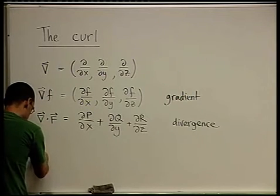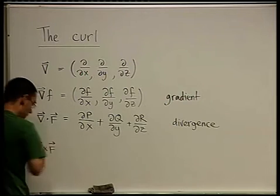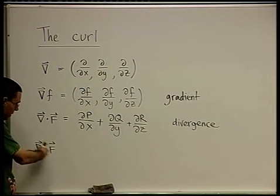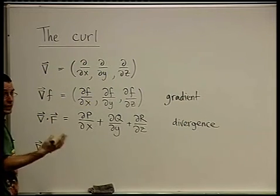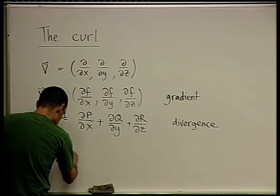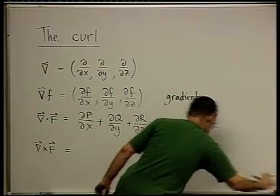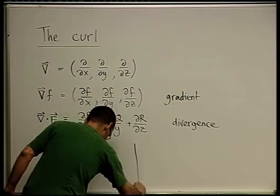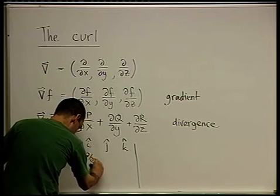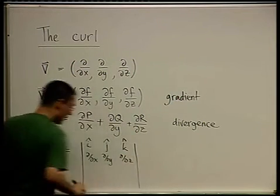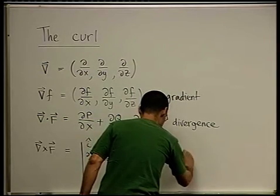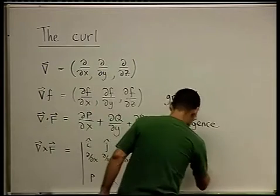The third appearance of this operator is, again, acting on a vector field, but this time using the cross product. This is abusive notation — thinking of Nabla as a vector and crossing the two vectors. This thing is the determinant with rows i, j, k; then d/dx, d/dy, d/dz; and the components of f are p, q, and r. This is called the curl of f, or the rotor. Both names are equivalent and both are used.